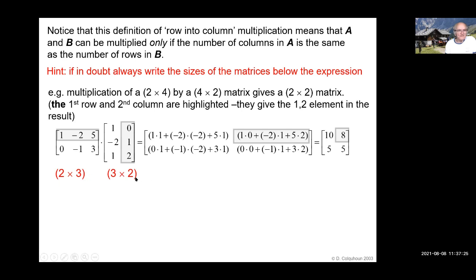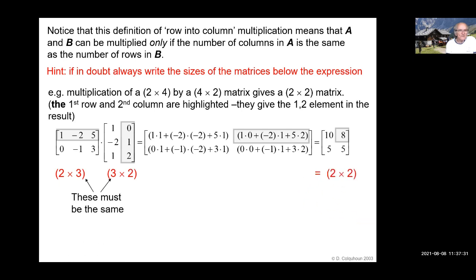It's very useful for keeping track of what's going on to write down the size of each matrix below it. That's two by three, this is three by two, so in order to be able to multiply them at all, those two numbers must be the same. And the outer pair of numbers is the size of the result — two by two.